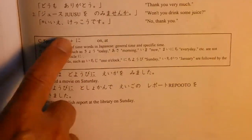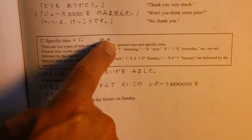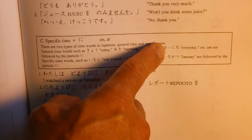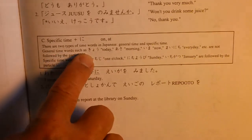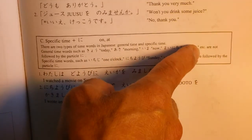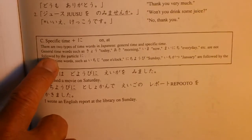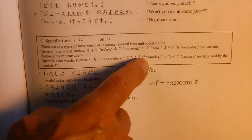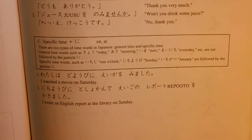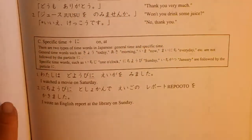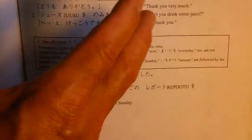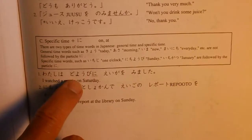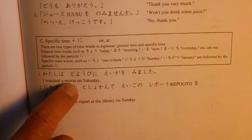There are two types of time words in Japanese — general time and specific time. General time words such as 今日、朝、今、毎日 are not followed by the particle に. But specific time words such as 一時、日曜日、一月 are followed by に. 私は土曜日に映画を見ました。— I watched the movie on Saturday.